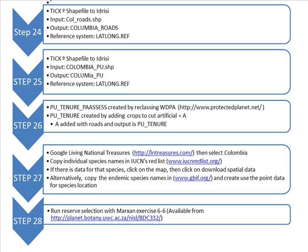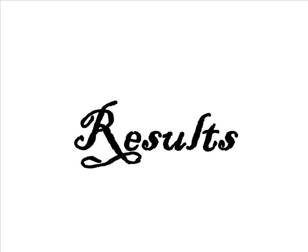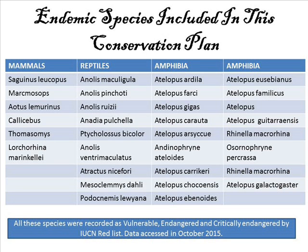Finally, that marks exercise 6.6, which is also available from Planet Botany. Here is a list of the endemic species found in Colombia that were used in this conservation plan. It includes 6 mammals, 9 reptile species, and 15 amphibian species — a total of 30 species. These species are either vulnerable, endangered, or critically endangered.